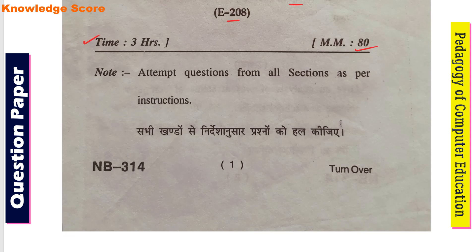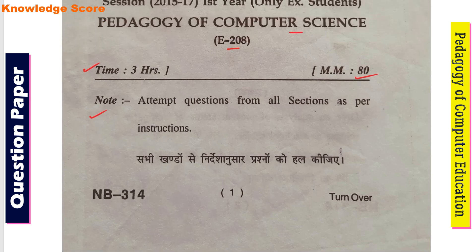Here is a note: Attempt questions from all sections as per instructions. In this question paper, there were 3 sections — Section A, B, and C.